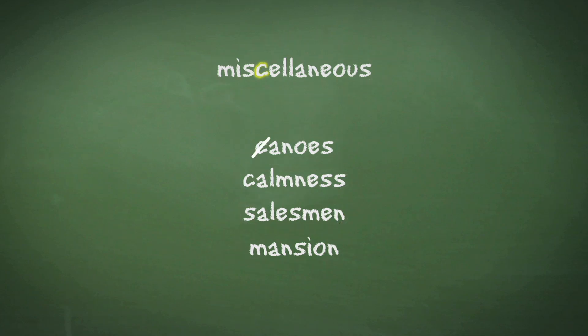After ticking off the C, work your way through A, N, O, E, and S, and we see that all these letters appear in miscellaneous. Therefore this answer can be discounted. Next we move on to calmness.